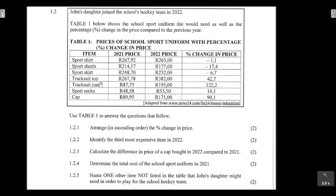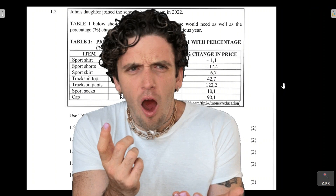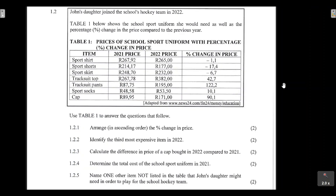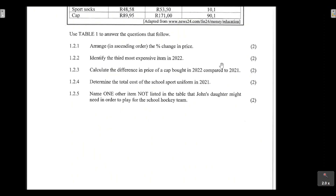The tracksuit top in 2021 was R267.78, and in 2022 it increased to R382 — a whopping increase of 42.7%. So that's basically what we're being shown: the price in each year and whether there was an increase or decrease in price.